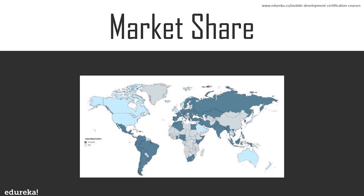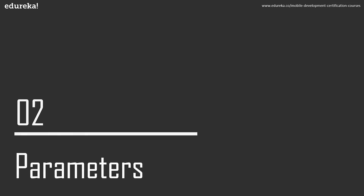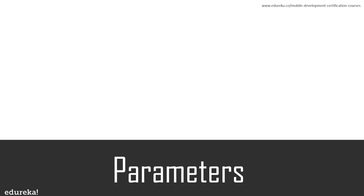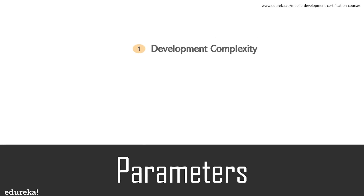In total, summing up the market share, Android has scored a goal here because cost is the first factor anybody would look out for. However, when it comes to security features not present in Android, iOS is going to be leading there. Overall, Android leads the market for 2018 and 2019. Now let's move ahead and discuss the parameters I'll use to compare both Android and iOS: development complexity, cost, programming languages, security, and speed.